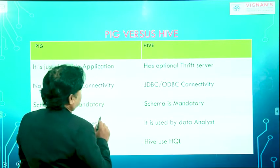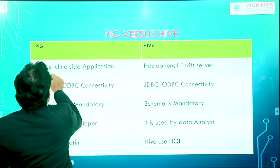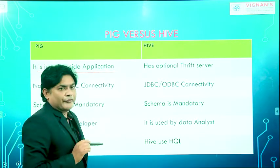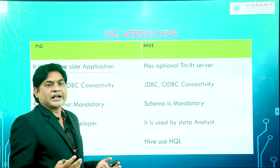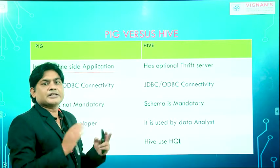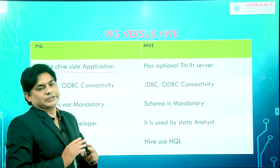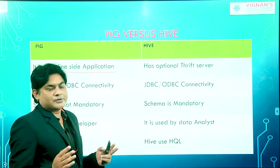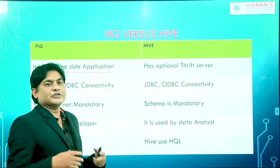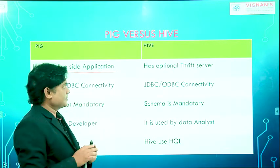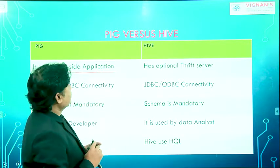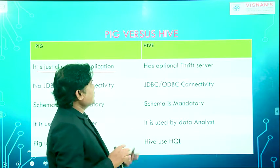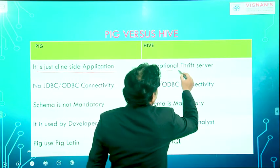The first difference is that Pig is just a client-side application. We can install Pig and start writing scripts - it's open source, we can download it and start using it on our laptop or system. But Hive has both features: it may be a client-side application and also it has a Thrift server.